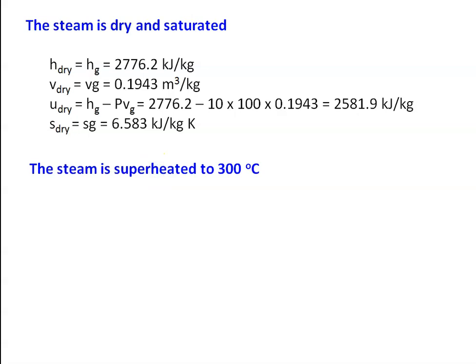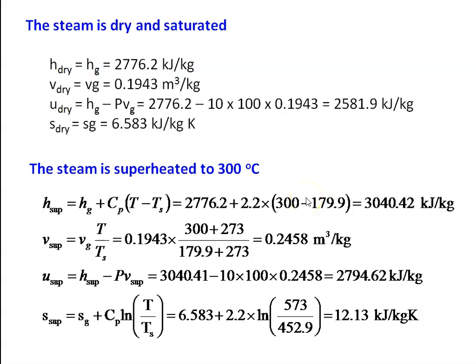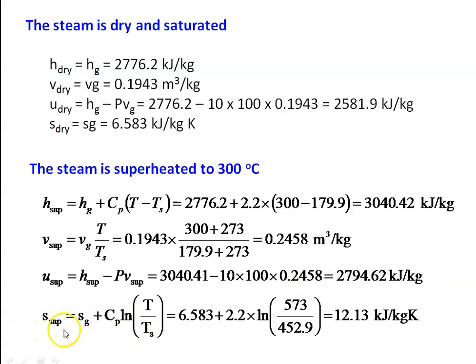When the steam is superheated to 300°C: H_super = Hg + Cp·(T − Ts) = 2776.2 + 2.2×(300 − 179) = 3040.42 kJ/kg. V_super = Vg × (T/Ts) = 0.1493 × (300+273)/(179.9+273) = 0.2458 m³/kg. Internal energy U_super = H_super − P·V_super, giving 3040.42 − 10×100×0.2458 = 2794.58 kJ/kg (approx.).